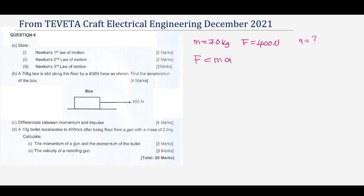The force has to be in newtons and the mass has to be in kg, which are the SI units. So from this we can say: force, which is 400 newtons, is equal to the mass which is 70 times the acceleration. Dividing both sides by 70, our acceleration will be 400 over 70.